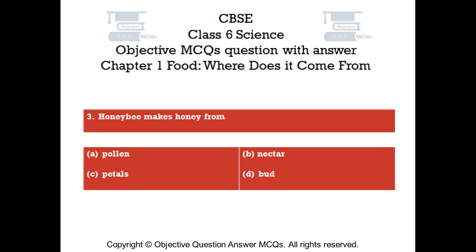Question number 3. Honeybee makes honey from? Option A: Pollen. Option B: Nectar. Option C: Petals. Option D: Bud.